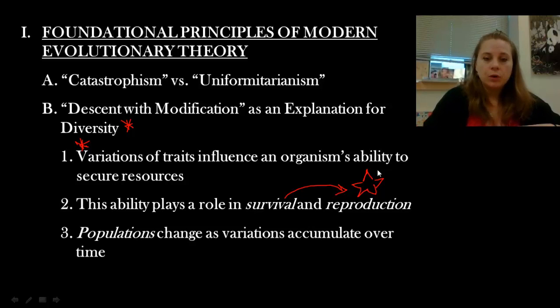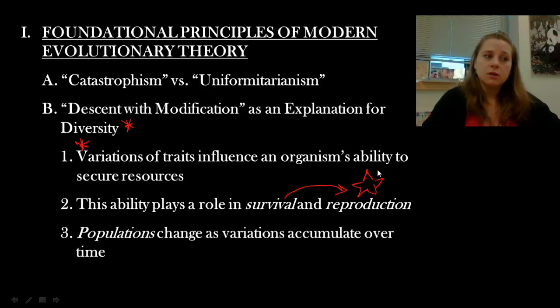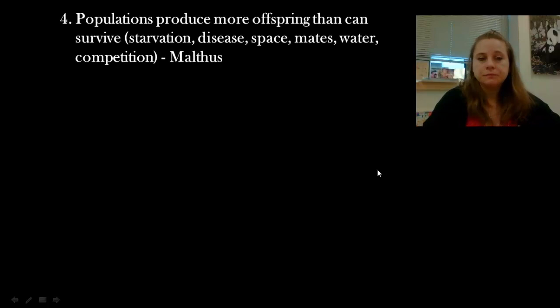One of the key things in terms of this modern theory is that populations change as variations accumulate over time. Our working definition is that evolution is change in the genetic makeup of a population over time — and again, time is that critical piece.